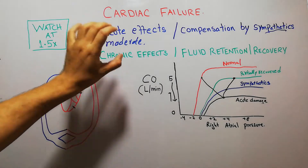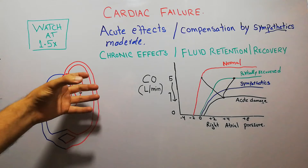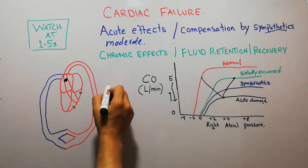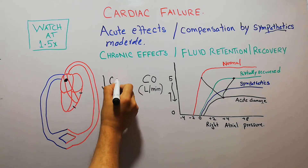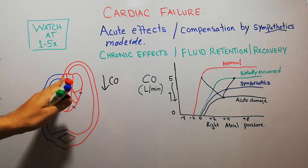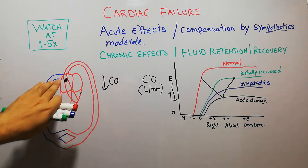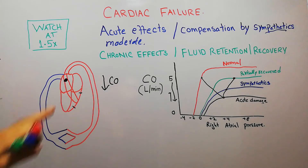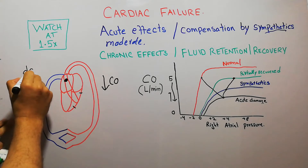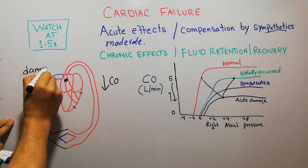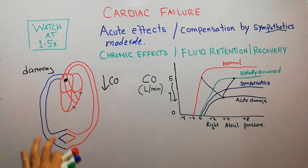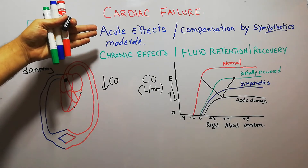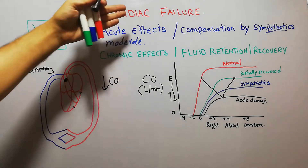In the acute stages, the cardiac output — the amount of blood that the heart pumps every minute — suddenly decreases. The heart is unable to pump enough blood forward, and similarly the amount of blood coming to the heart also decreases. Blood is unable to return to the heart, leading to damming or pooling of blood in the peripheries. These are the two main effects that occur in acute heart failure.